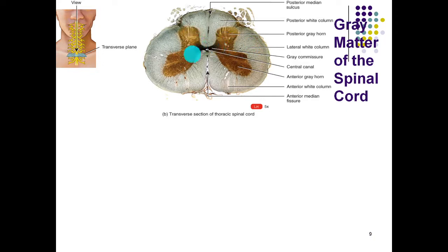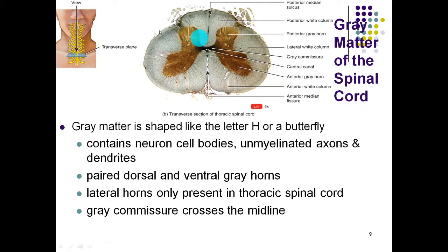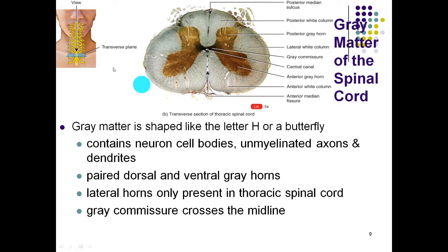The gray matter is shaped kind of like a letter H or a butterfly. It contains neuron cell bodies that are unmyelinated. Like a butterfly, it has four wings: the front wings are the anterior or ventral gray horns, and the rear are the dorsal or posterior gray horns. There is also a structure called the gray commissure that connects the two sides of our spinal cord — a set of gray matter connecting the two halves.